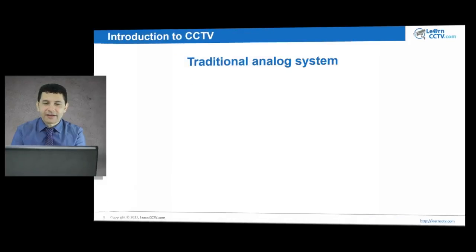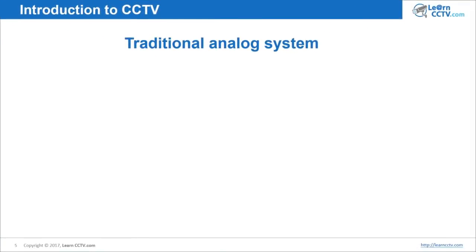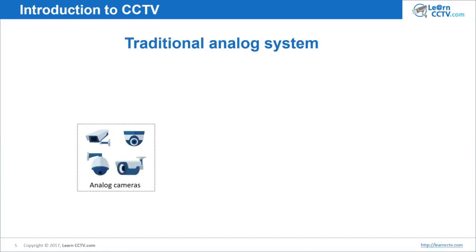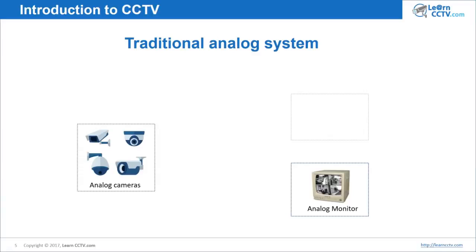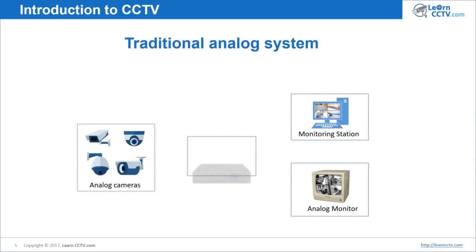Let's have an idea of how a traditional system works. Let's start with the analog system. Here I have my cameras — different kinds of analog cameras. Then here I have my analog monitor and also my monitor station, which is a computer with software to monitor the system. In the middle of everything, I have the DVR — the digital video recorder — used to record the videos from the cameras.